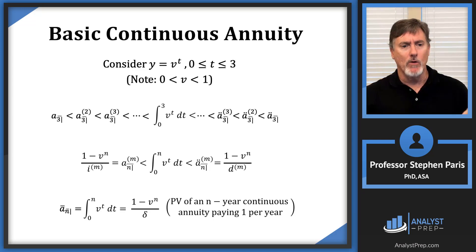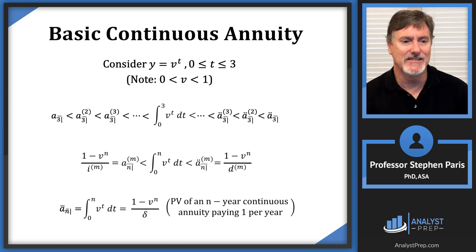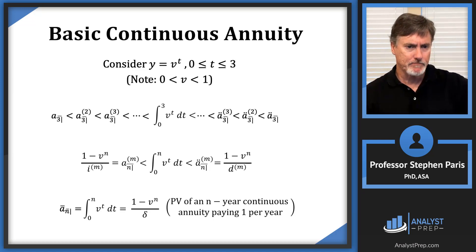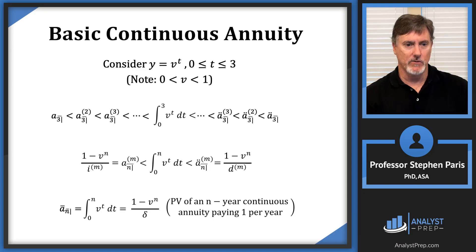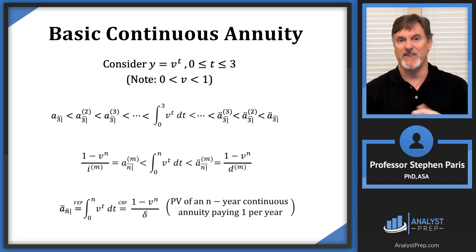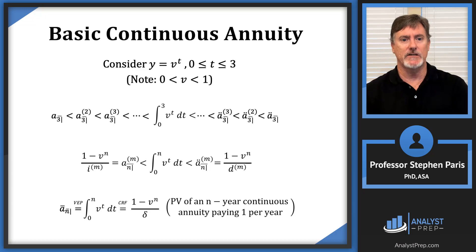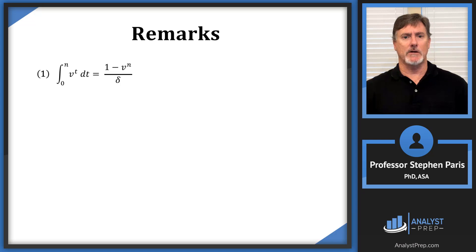The symbol we use is ā_angle_N (a-bar angle N) — actuaries like their bars! The VEP expression I think of for ā_angle_N is the integral from 0 to N of v^t dt, and the closed-form formula is (1 − v^N)/delta. This represents the present value of an N-year continuous annuity paying 1 per year continuously.